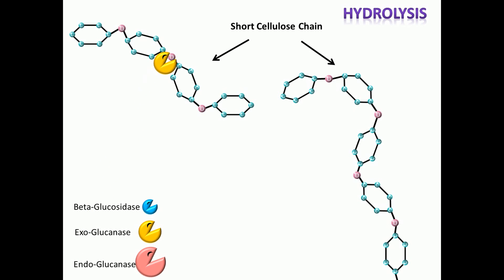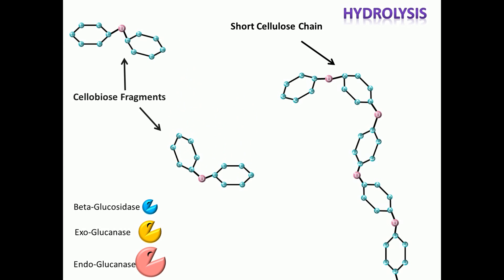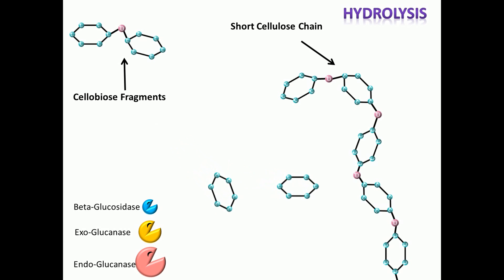First, the long cellulose chain is decomposed by endoglucanase into short cellulose chains. Then the short cellulose chain is decomposed by exoglucanase into cellulose fragments. Finally, the cellulose fragment is decomposed by beta-glucosidase. This is the entire process of hydrolyzing cellulose into glucose.